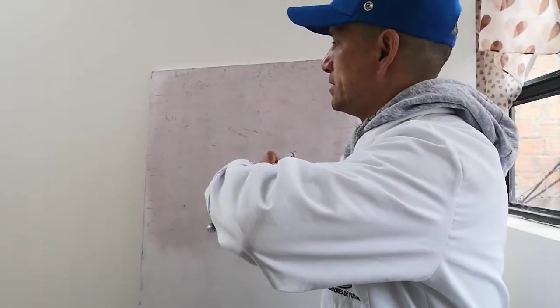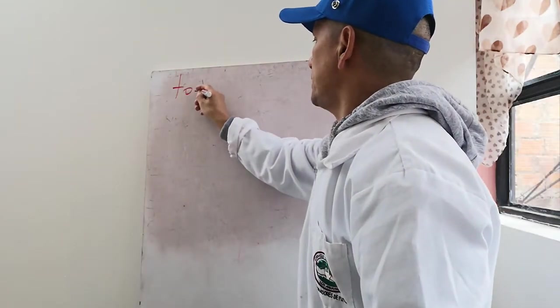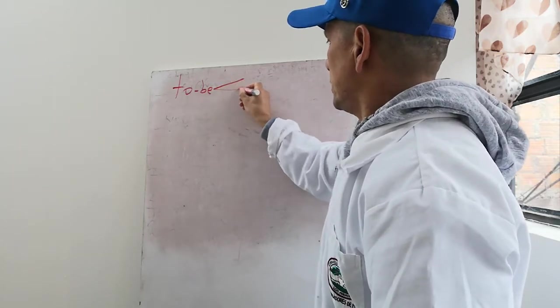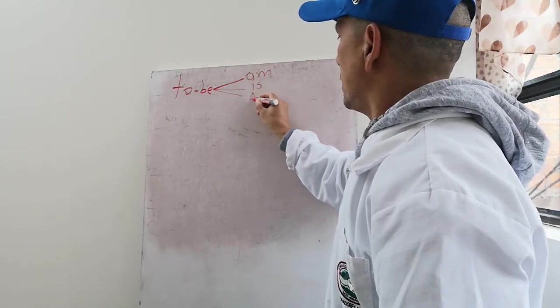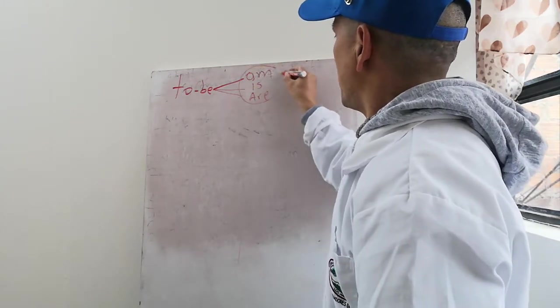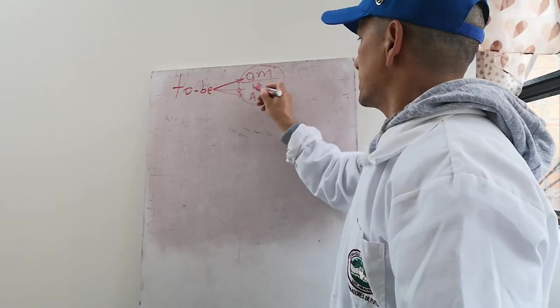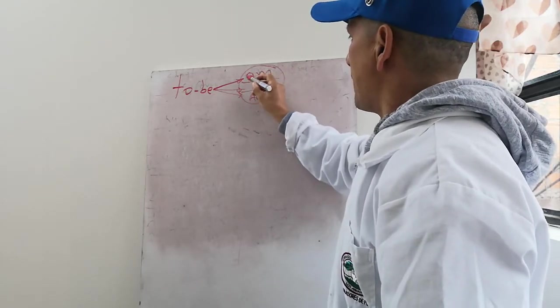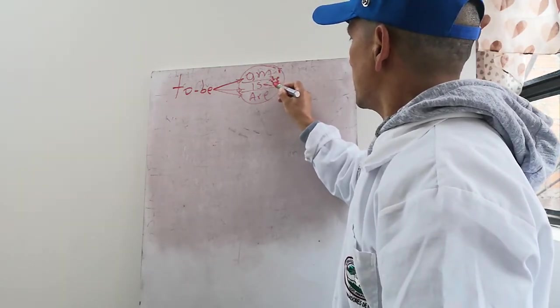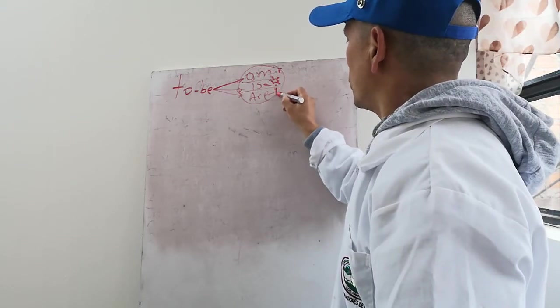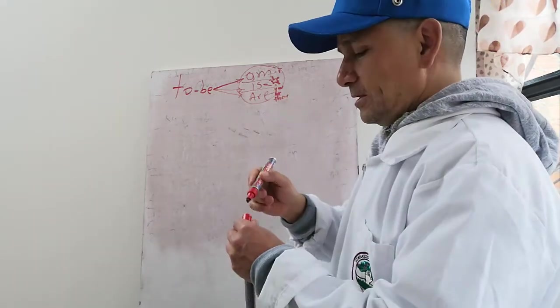El primer tema que todos deben de saber va a ser el verbo to be. Recuerden que esta palabra to be básicamente se transforma en tres palabras: am, is, are. Para aprender el verbo to be, tienen que saber que am siempre va con I, que is siempre va con las terceras personas, y que are va con los plurales, con you, we, y they.